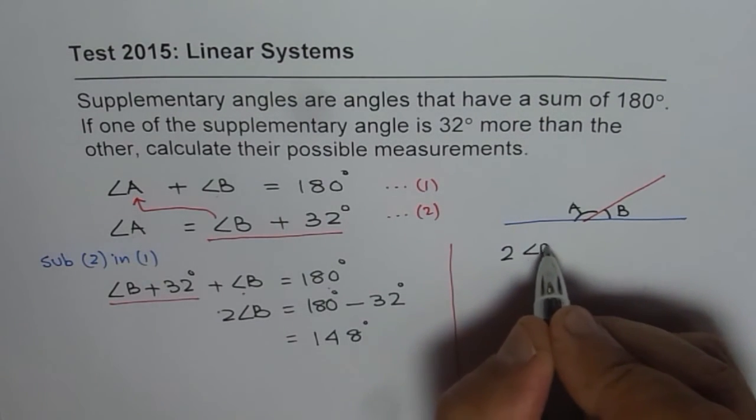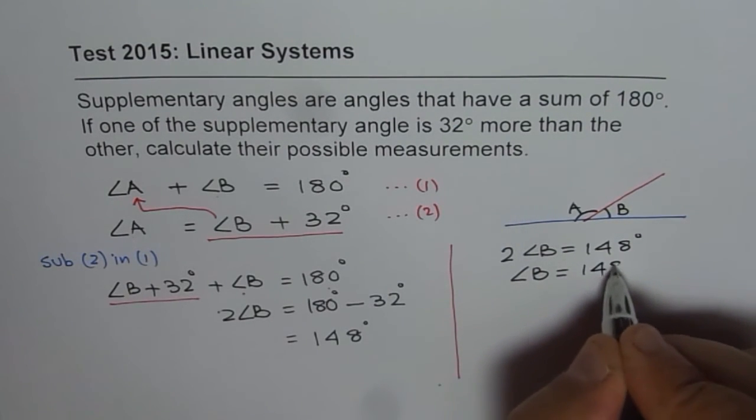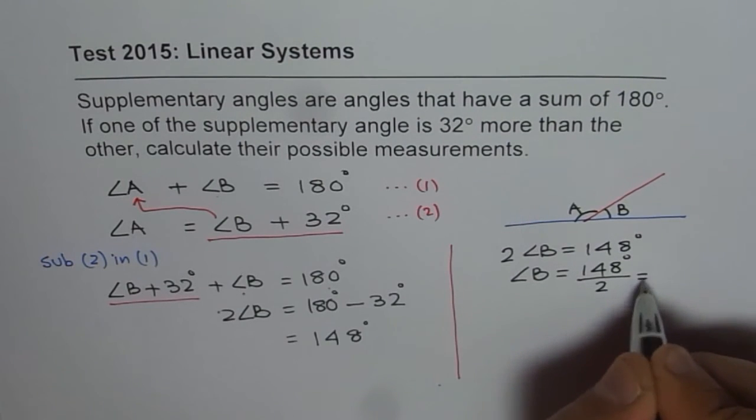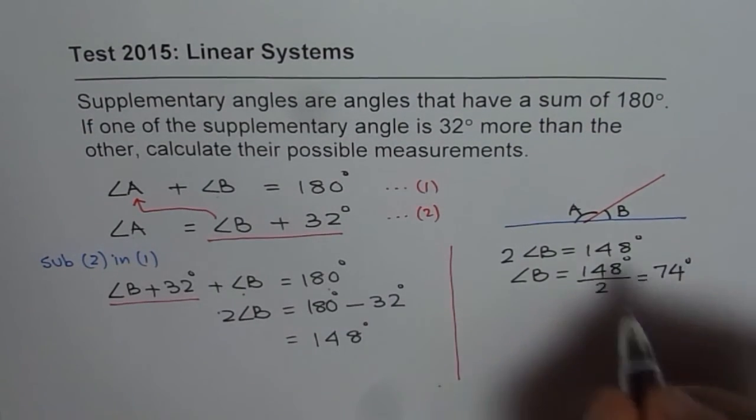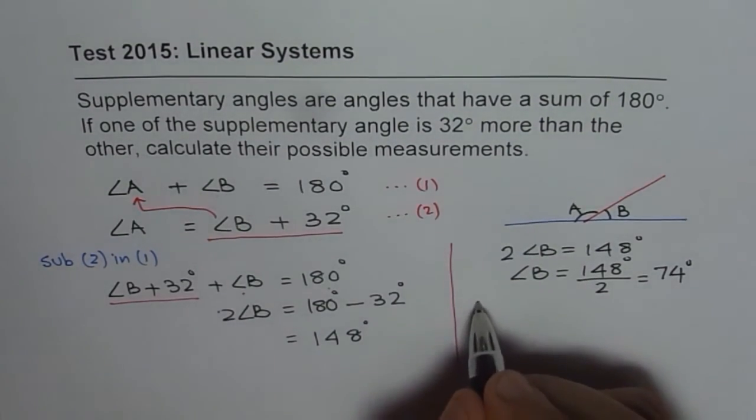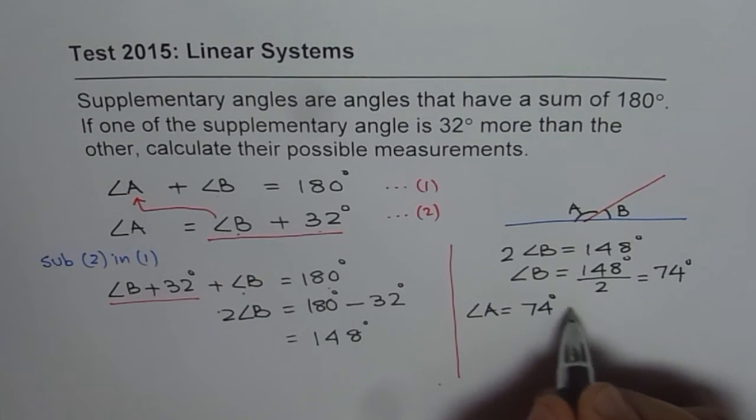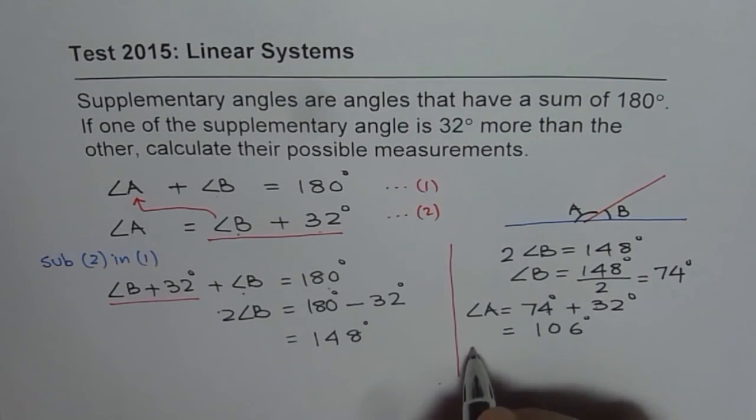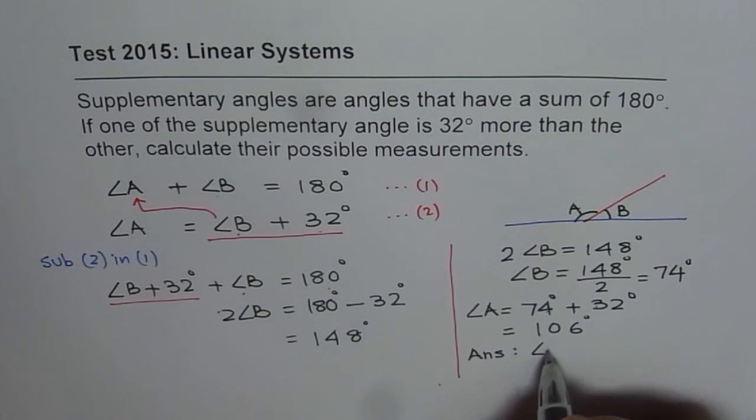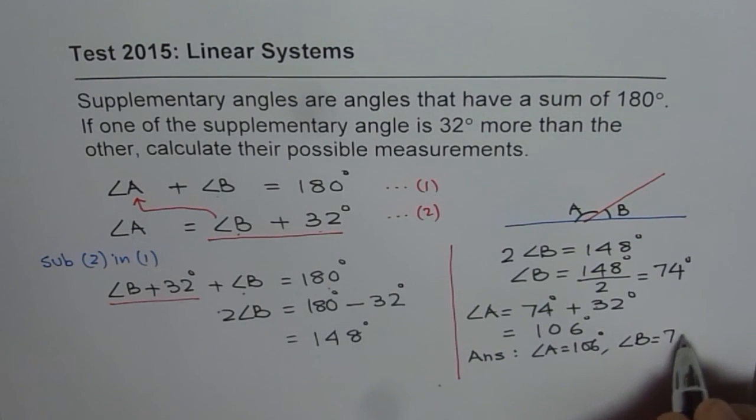So twice angle B equals 148 degrees and therefore angle B should be equals to 148 degrees divided by 2. And that gives us 74. So 74 degrees is angle B. How much is angle A? Angle A equals angle B plus 32. So it is 74 degrees plus 32 degrees and that is 4 plus 2 is 6, 7 plus 3 is 10. 106 degrees. So we have our answer. The answer is angle A equals 106 degrees and angle B equals 74 degrees.